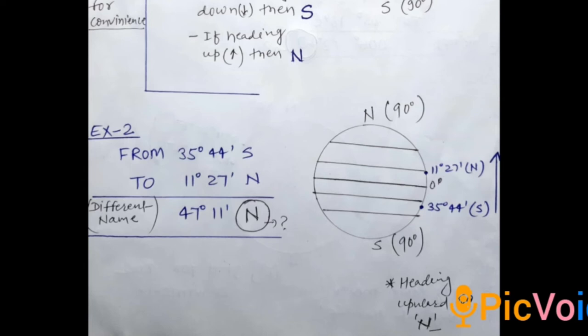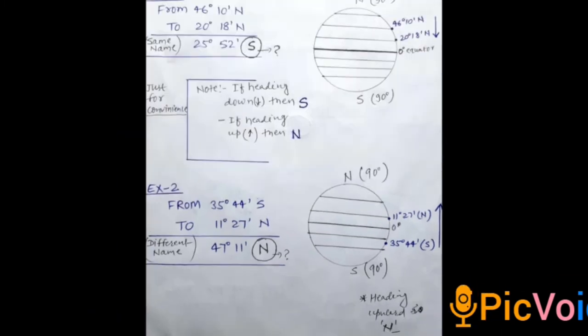If it is in upward direction, we will give the sign name of the direction as North. So two rules: first is same name subtract, different name add. And second is if you are going upward then North direction, and if you are going downward then South direction.